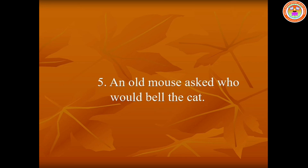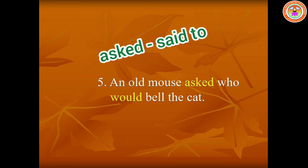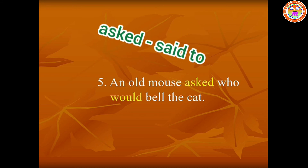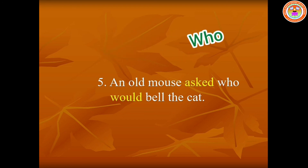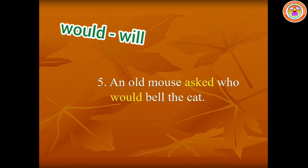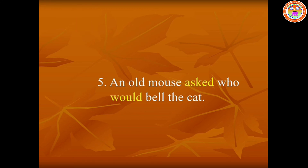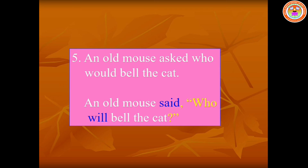Fifth one: 'An old mouse asked who would bell the cat.' Dear children, 'asked' should be changed into 'said to'. There is no conjunction, so we have to write the question word 'who', and 'would' should be changed as 'will'. The answer is: An old mouse said, 'Who will bell the cat?' Dear children, we didn't write 'said to' because after 'asked' we don't have any object pronoun. Remember, children, we have to close the inverted commas after the question mark.